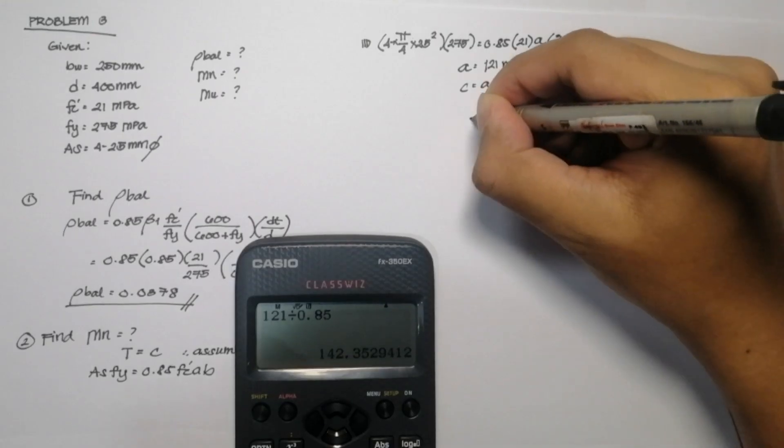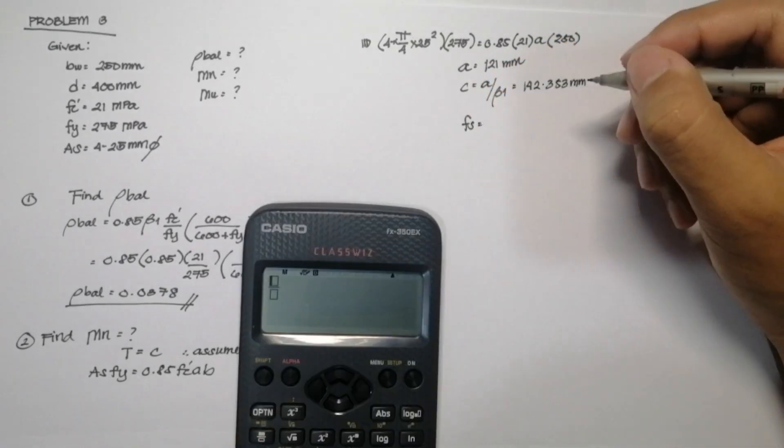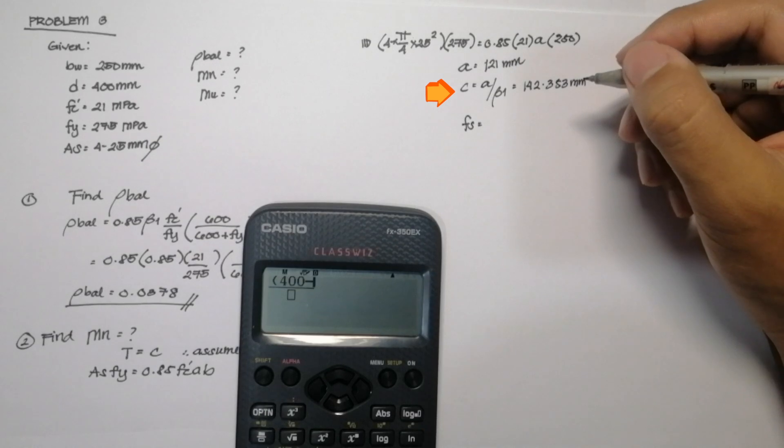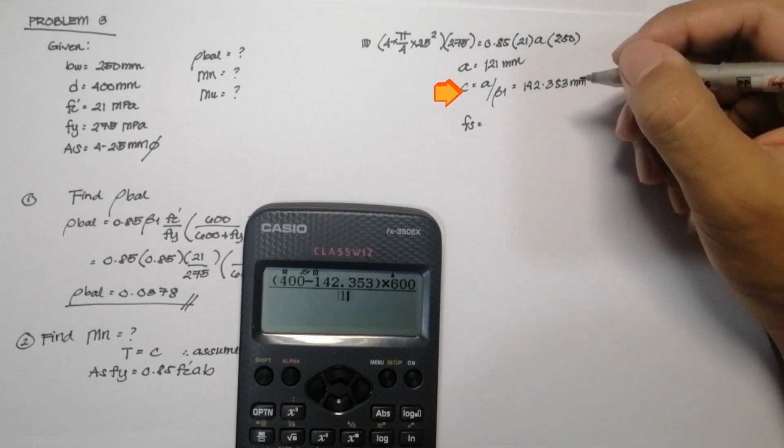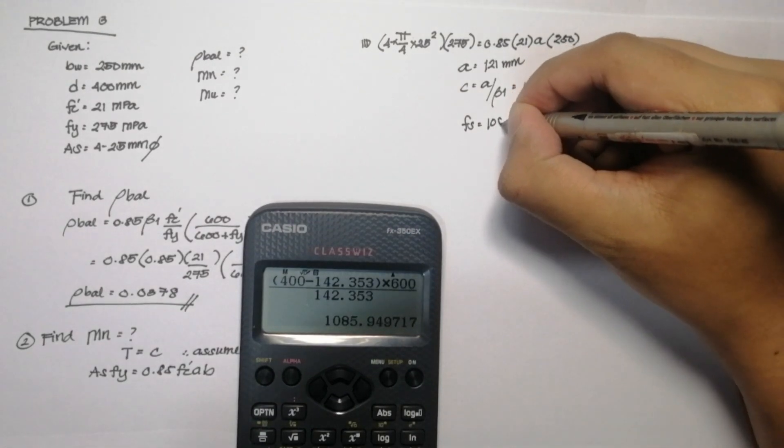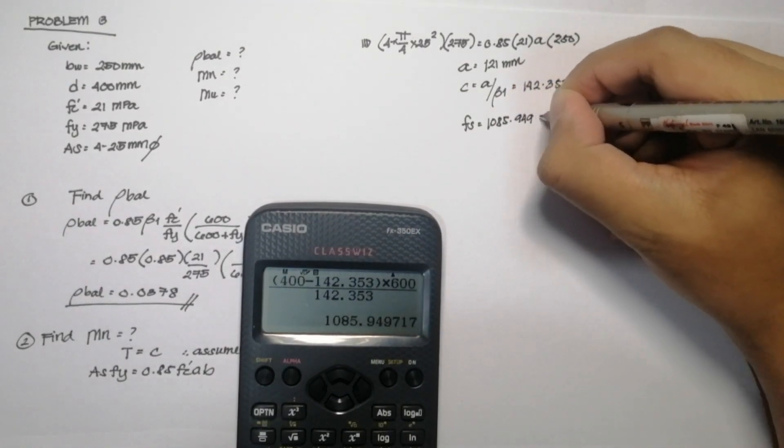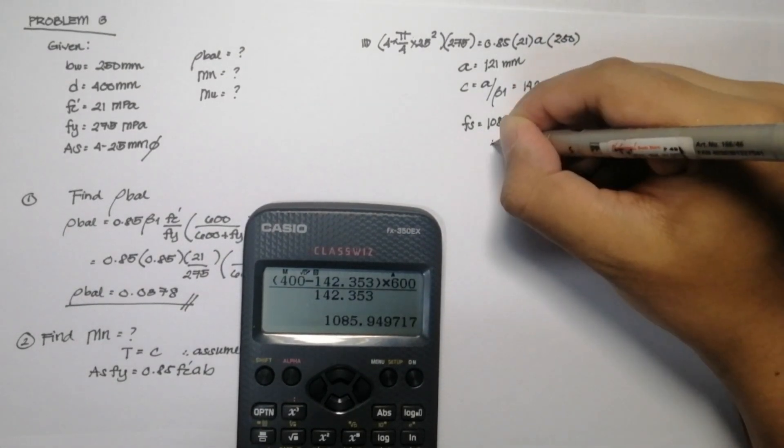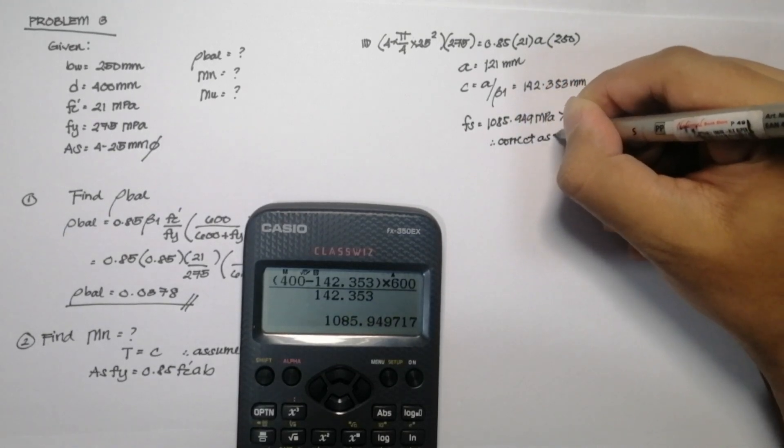Next, we need to check if our assumption is correct. So we need to solve for the value of Fs. So it will be equal to D minus C, 400 minus 142.353 times 600 over C, 142.353. So our stress in the steel is 1085.95 MPa. So it is obviously greater than fy. So our assumption is correct.